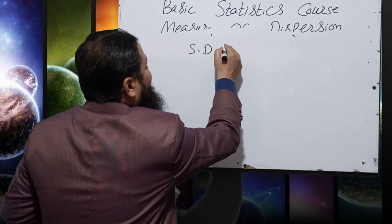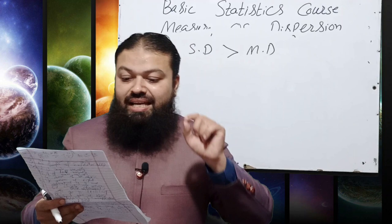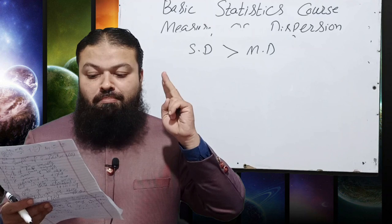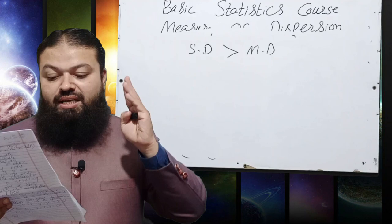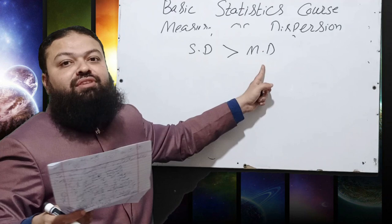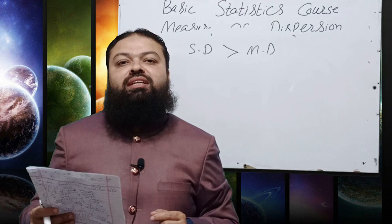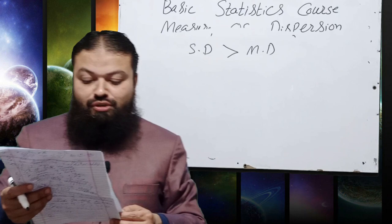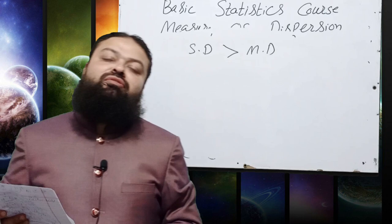Question number 8: For any discrete distribution, the standard deviation is: (a) not less than mean deviation, (b) less than mean deviation from median, (c) equal to mean deviation from mean, (d) none of the above. Standard deviation is always greater than mean deviation, so option (a) — not less than mean deviation from mean — is correct.